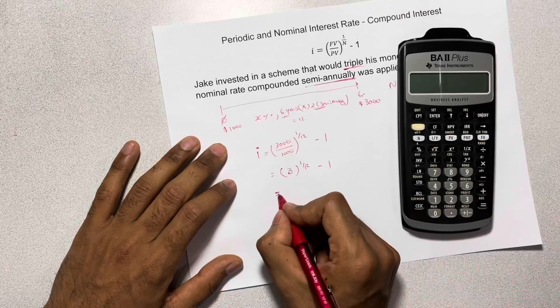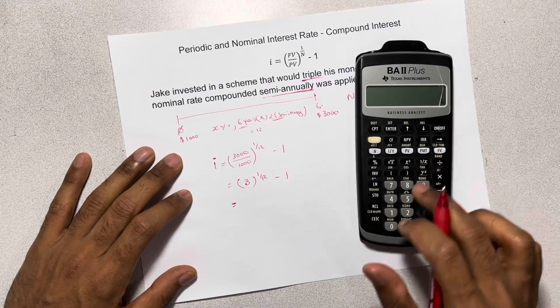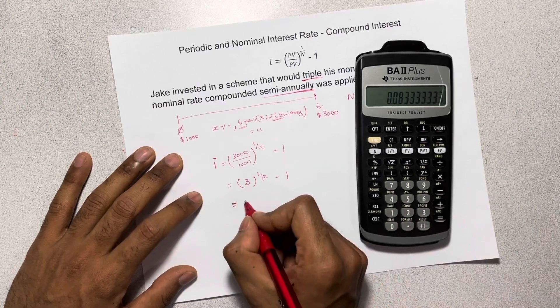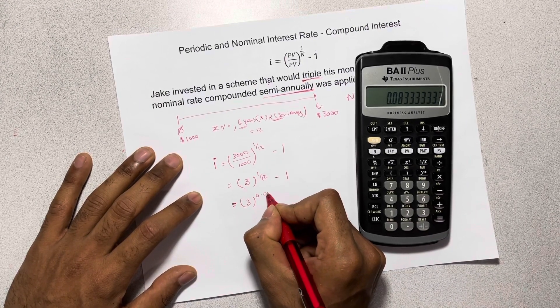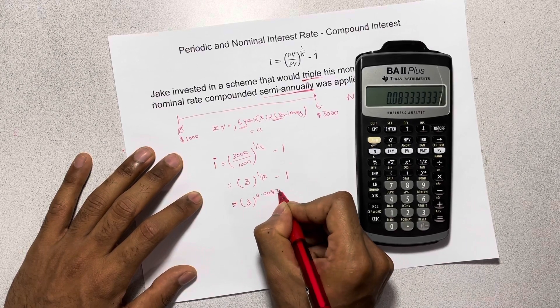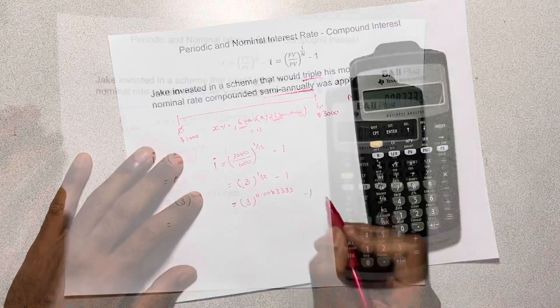So that is equal to 1 divided by 12, so that's 3 to the power of 0.0083333 minus 1.